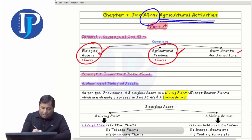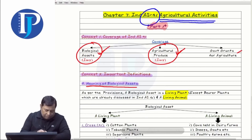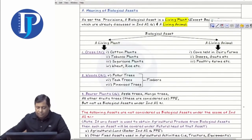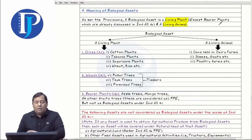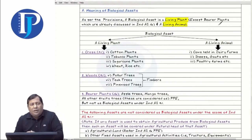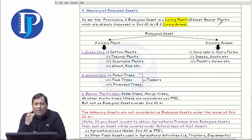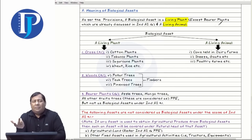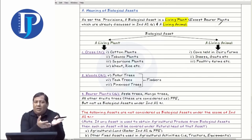We covered the meaning of biological assets. When we learned the meaning of biological asset in class, I explained in a very simple way that biological assets means a living plant or living animal. These are the biological assets.